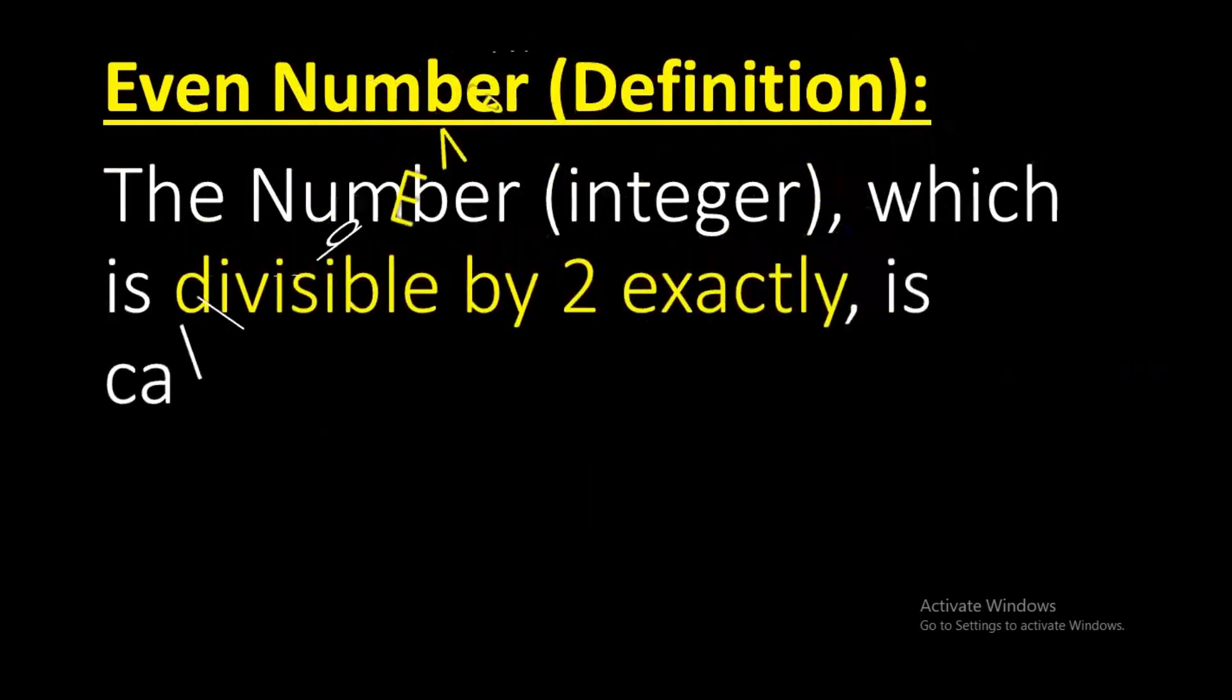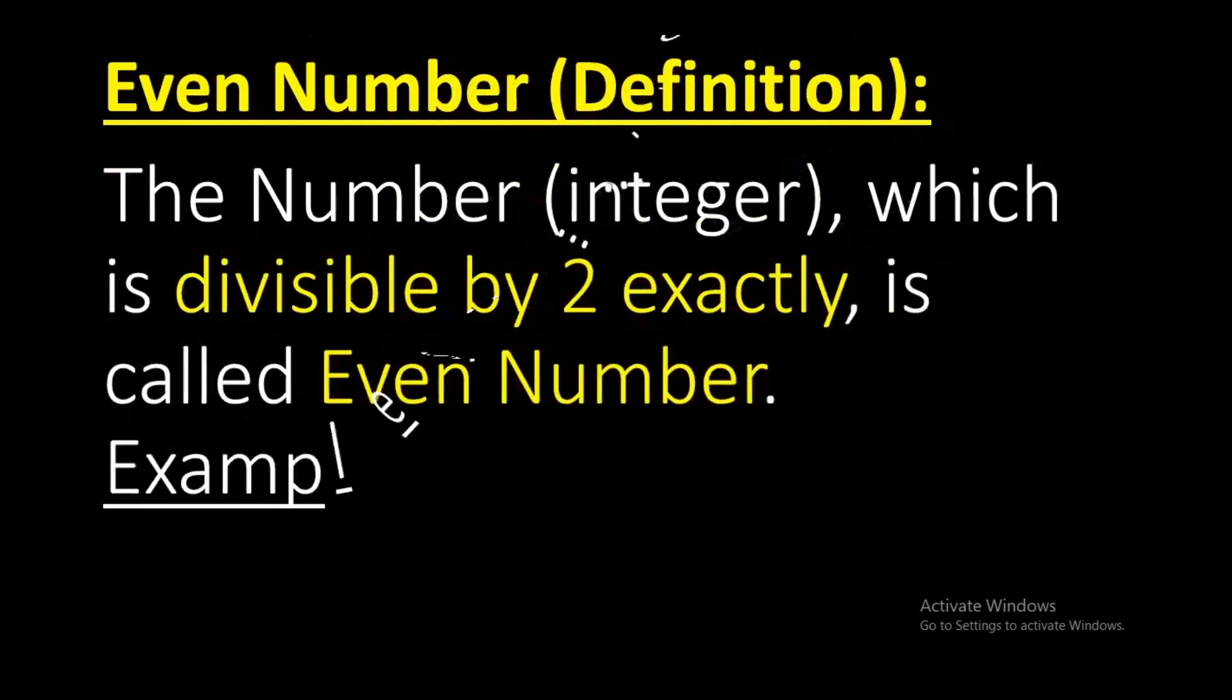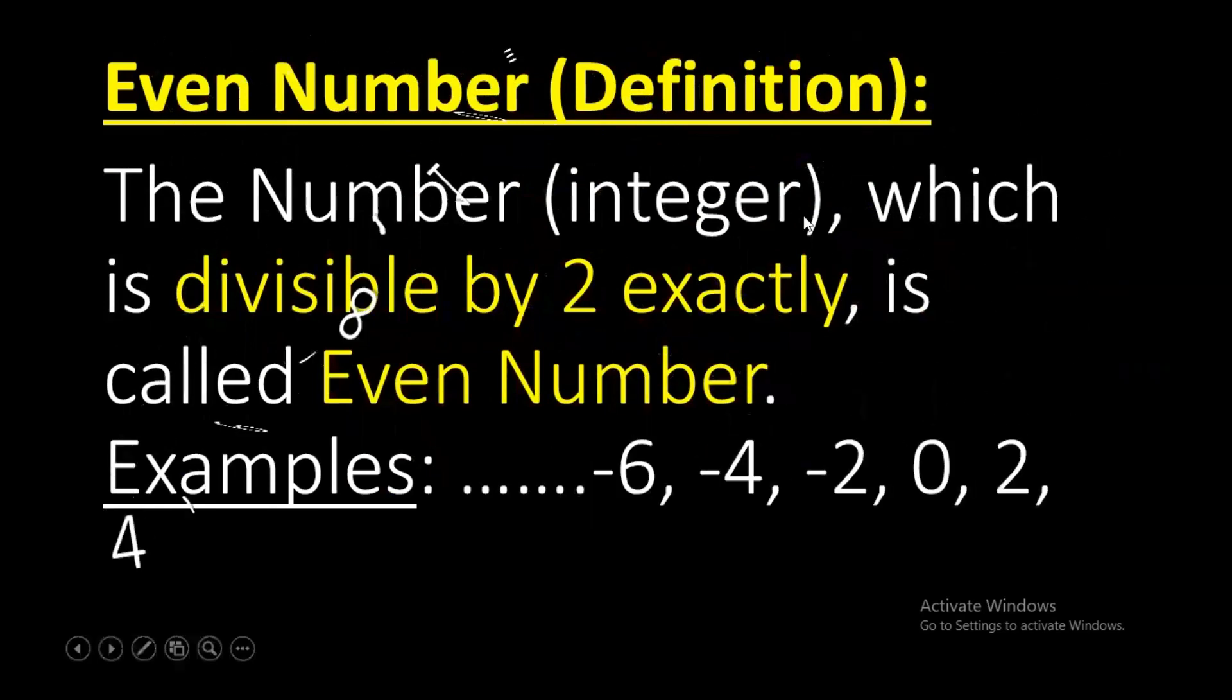A number or integer which is divisible by two exactly is called an even number. Examples are—it may be negative integers, positive integers, or 0. 0 is an integer. So we can say minus 6, minus 4, minus 2, 0, 2, 4, 6, 8, 10 and so on are even numbers.